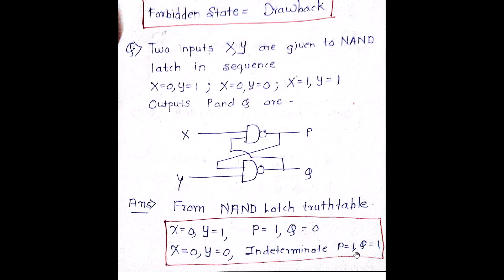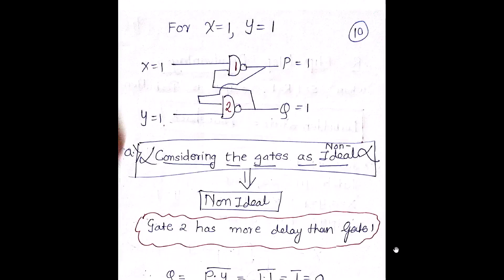Indeterminate means P=1 and Q=1. These two are complementary to each other, so it is not possible that P and Q are both equal to 1 — either one has to be 0 and the other 1. But in this condition it is not possible, so we consider it indeterminate. When X=0, Y=0, P=1 and Q=1 is a forbidden condition. But in an ideal scenario, the gates are not going to be very ideal — the gates are going to be non-ideal.